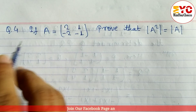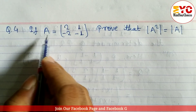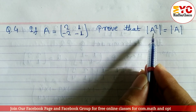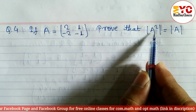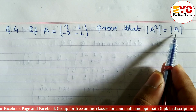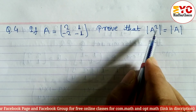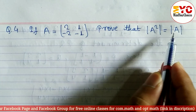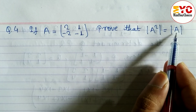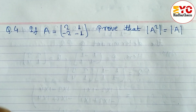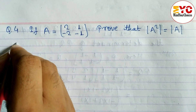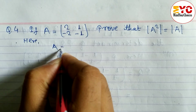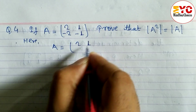Here we have a question: if A is equal to [[2, 1], [-2, -1]], prove that the determinant of A squared is equal to the determinant of A. We have to find A squared, then find its determinant. A is already given so we can find determinant of A and check whether these two are equal or not.